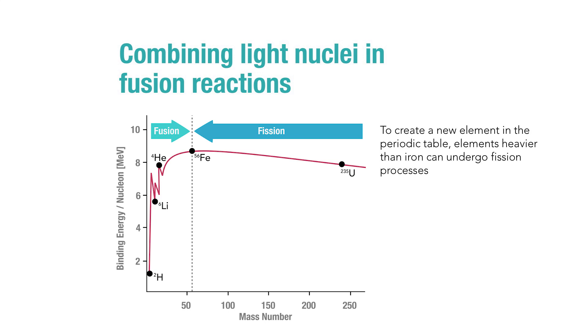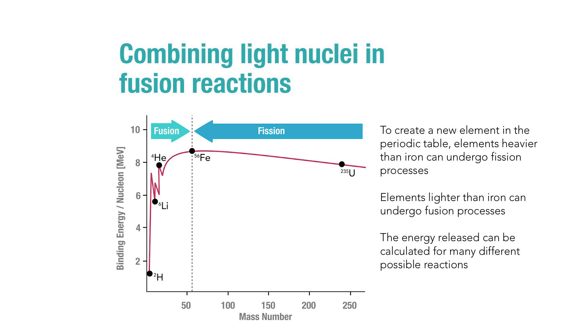On the left-hand side of this plot, you'll note that the elements lighter than iron can actually undergo fusion processes to build up new elements. As this process occurs, the energy that is released can be calculated for the many different possible fusion reactions. For examples of these calculations, please see the assessments and the notes for this section online. We'll see you next time.